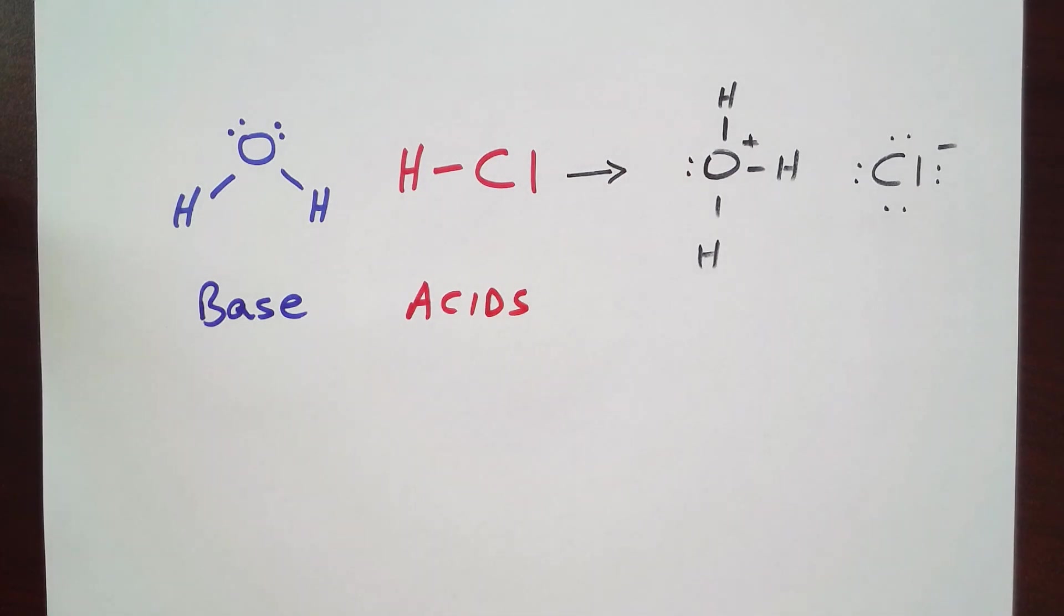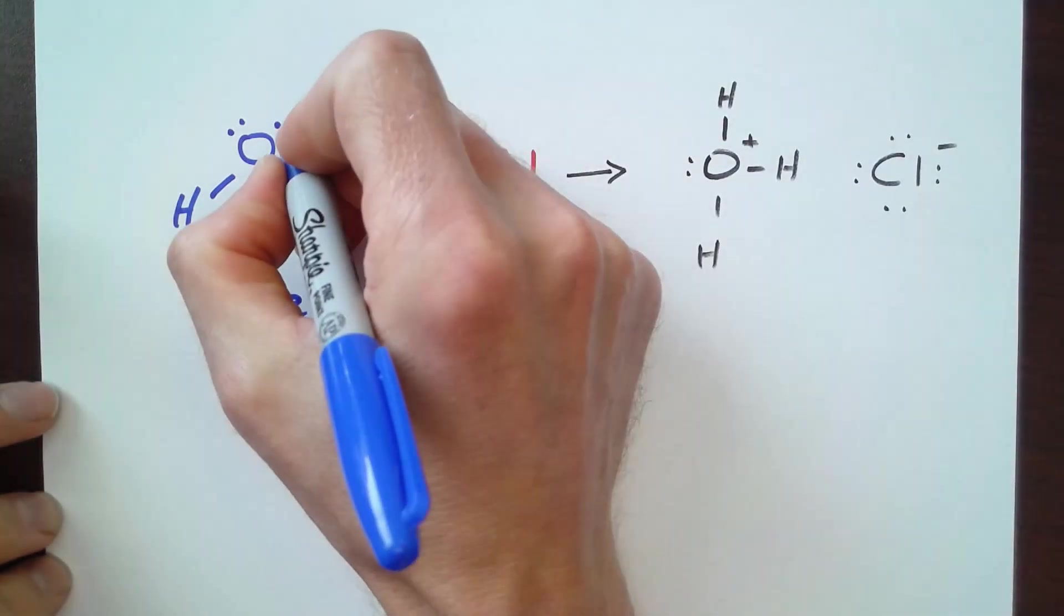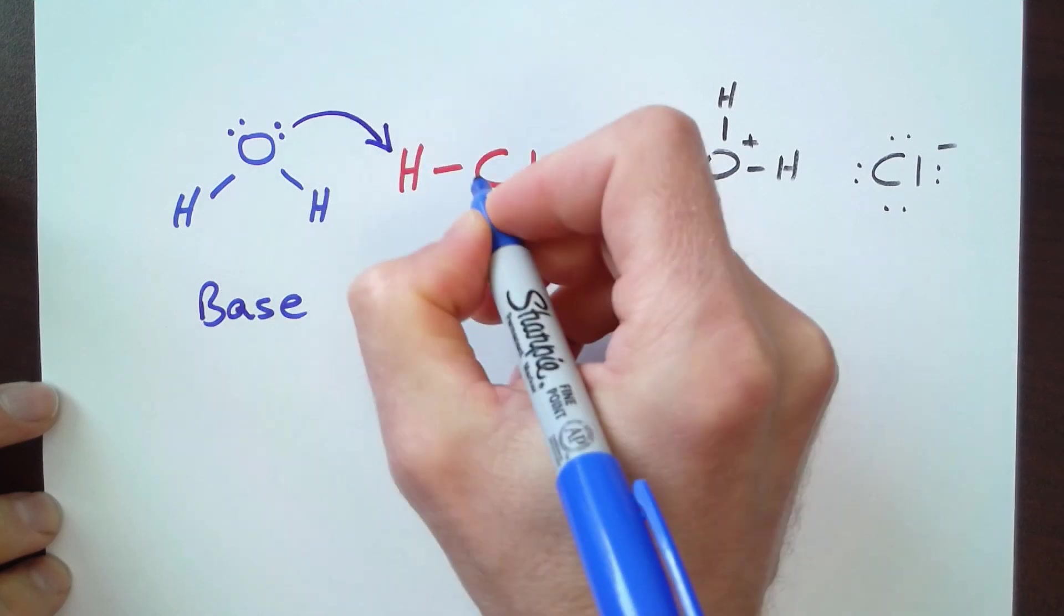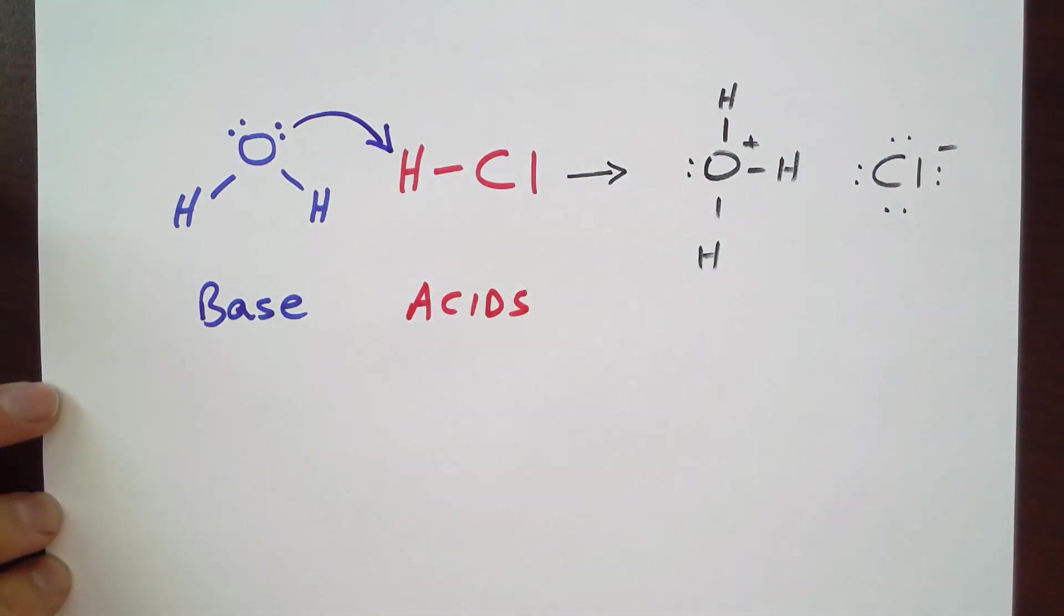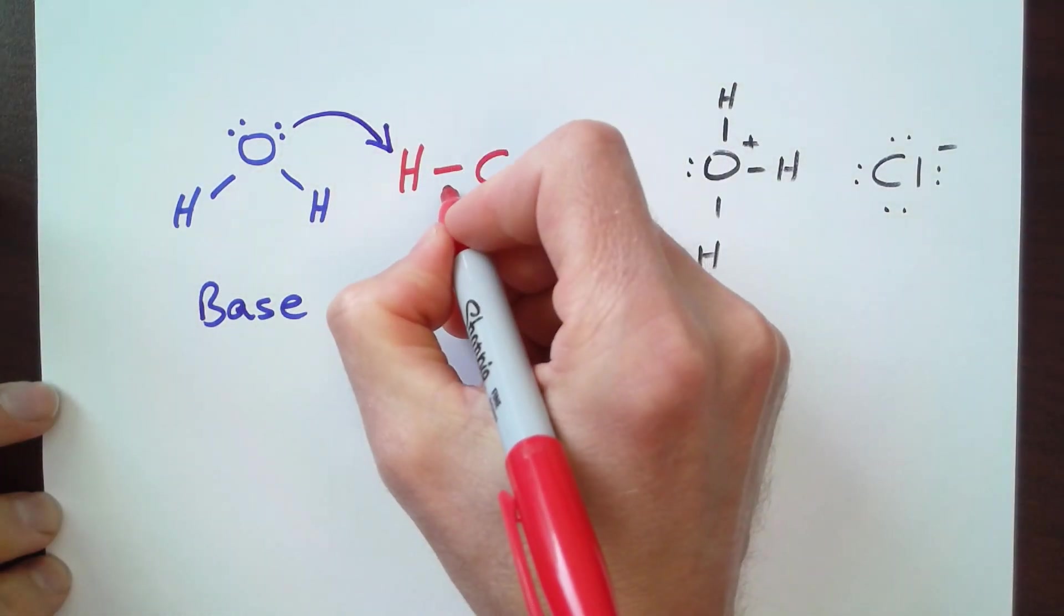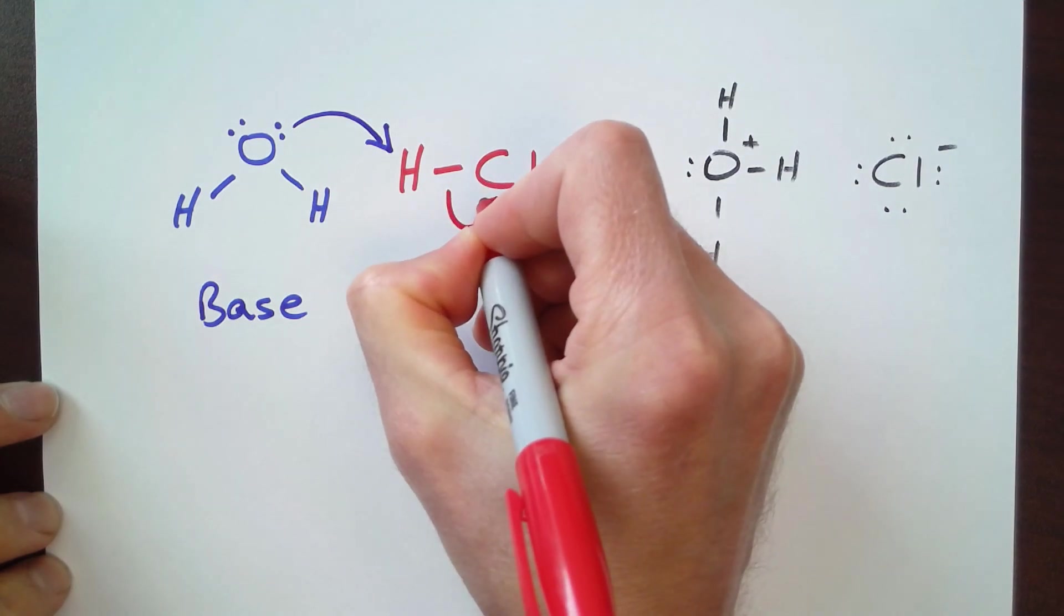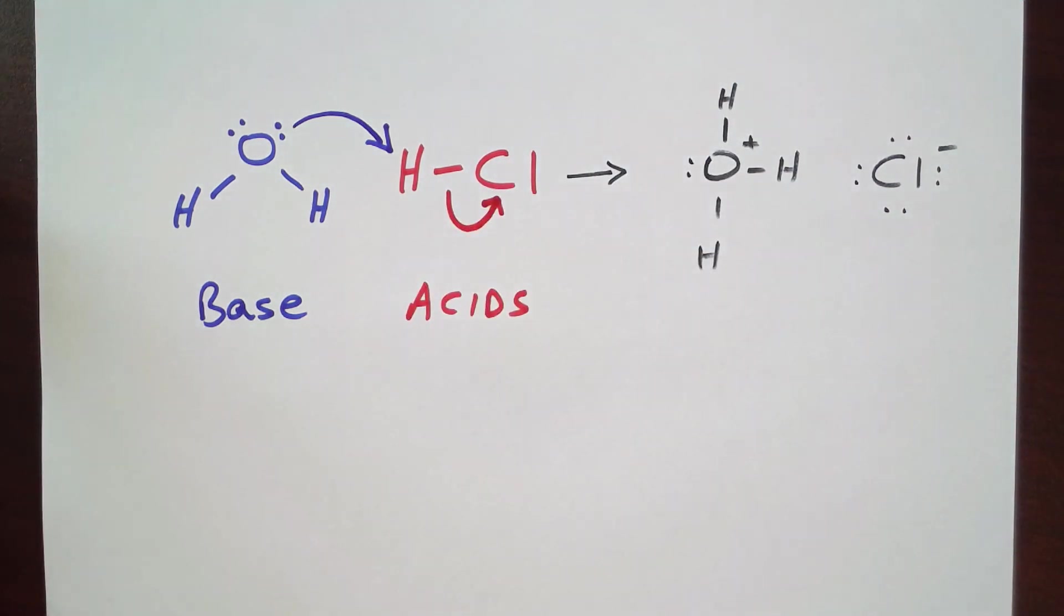We've further discussed that we can classify bases as electron donors, and this is very clearly seen when we look at the reaction. How do the electrons move? The electrons from the oxygen on the water come and form a bond with the hydrogen on the hydrochloric acid to form the hydronium ion.